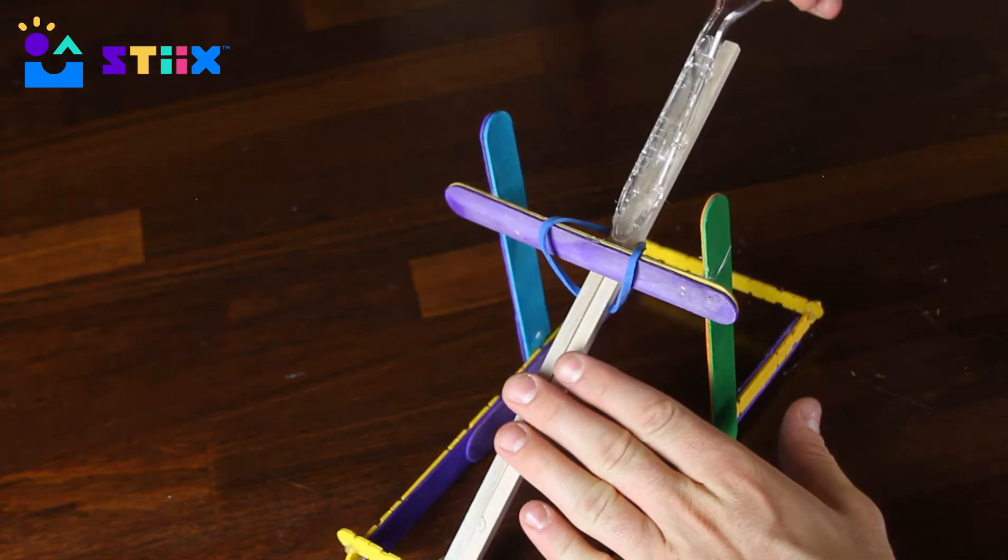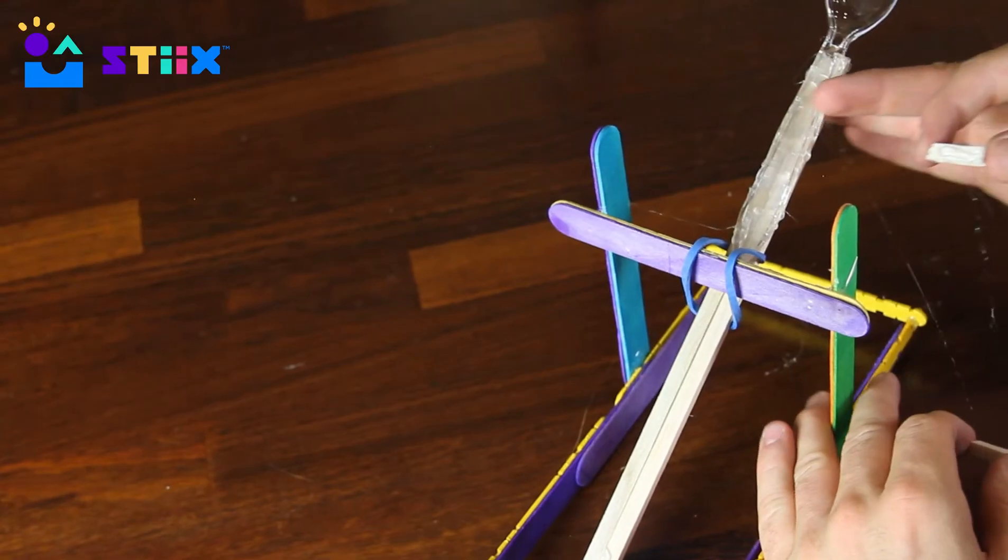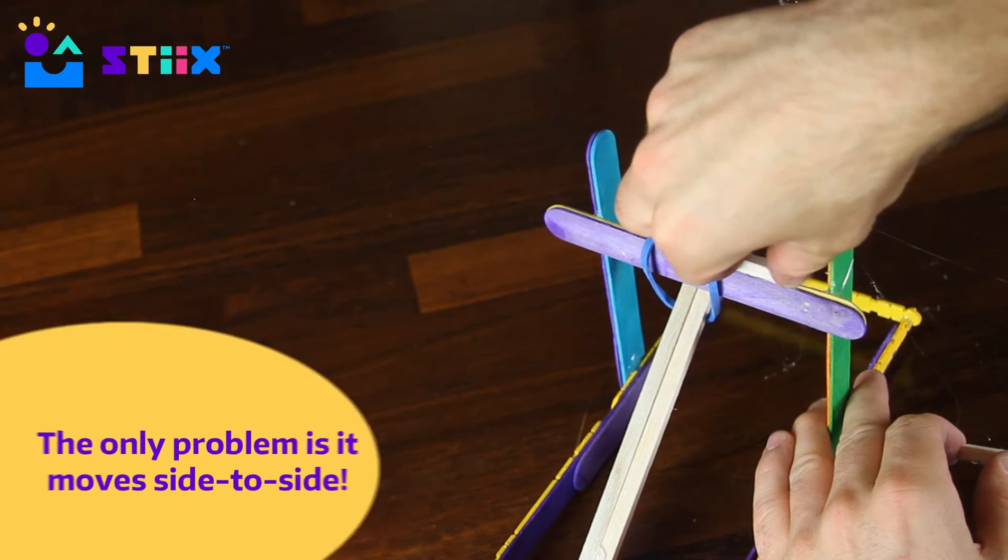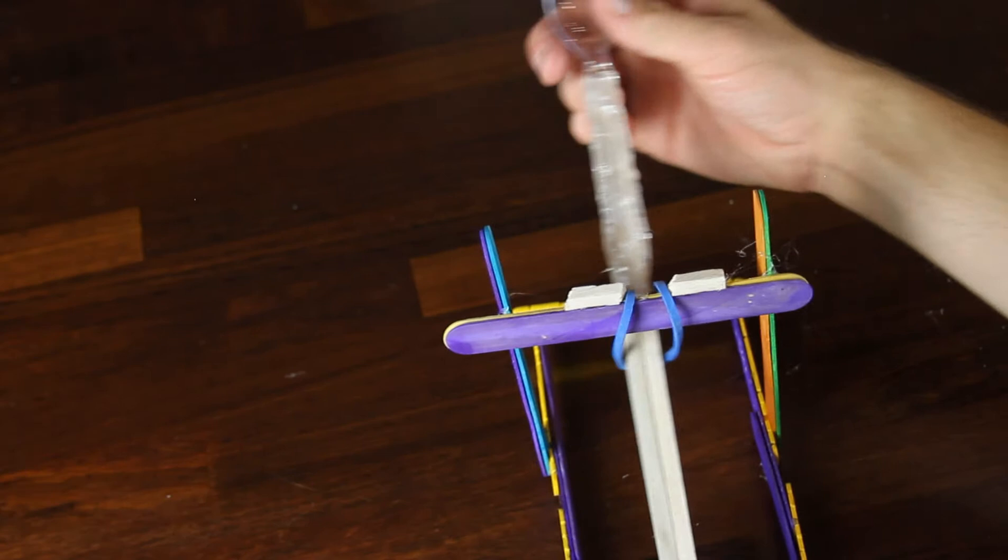From here it's all about strengthening it and making the improvements as you see fit, kind of like the triangles you see at the bottom of our catapult and also the stoppers we put up top to prevent things from going side to side.